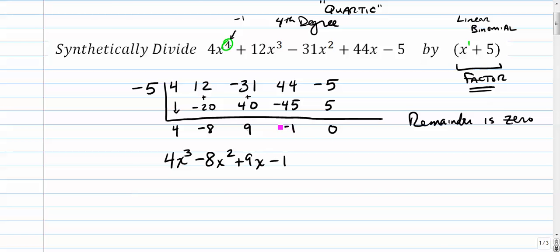We're using this minus 8x squared plus 9x minus 1. This is your, right here, this is your constant term. That's your constant term, c.